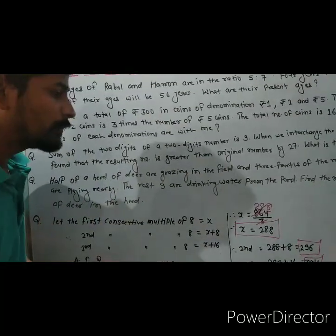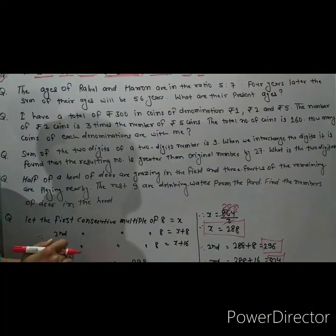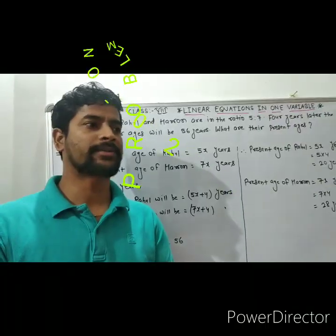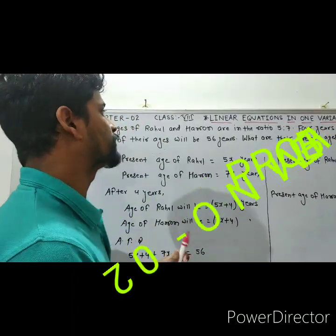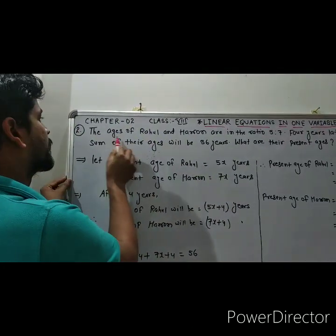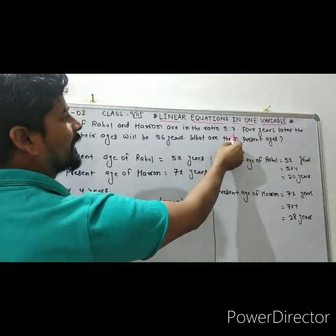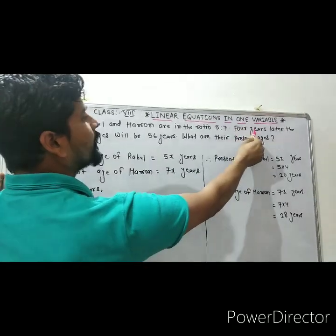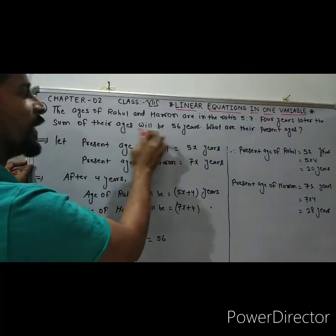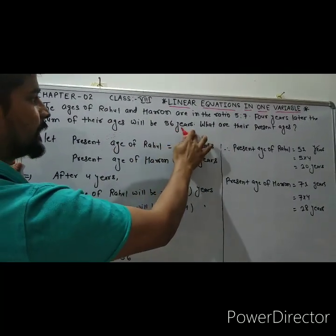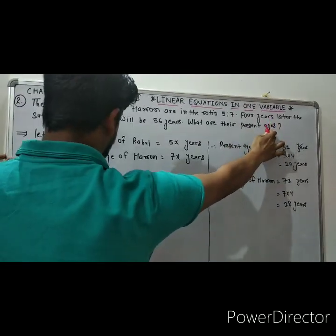Now I will solve the second one. Question number 2: The ages of Rahul and Haroon are in the ratio 5 is to 7. Four years later, the sum of their ages will be 56 years. What are their present ages?